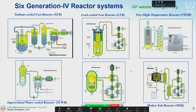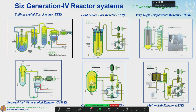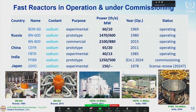Let me briefly explain the current status of innovative nuclear reactors. Taking the example of the Generation 4 International Forum — an organization probably you know — which is trying to implement rules, designs, and international cooperation in innovative nuclear reactors: they selected six potentially interesting systems that could be innovative, safe, and sustainable. These include sodium-cooled fast reactors, lead-cooled fast reactors, very high-temperature reactors, supercritical water-cooled reactors, gas-cooled reactors, and molten salt reactors.